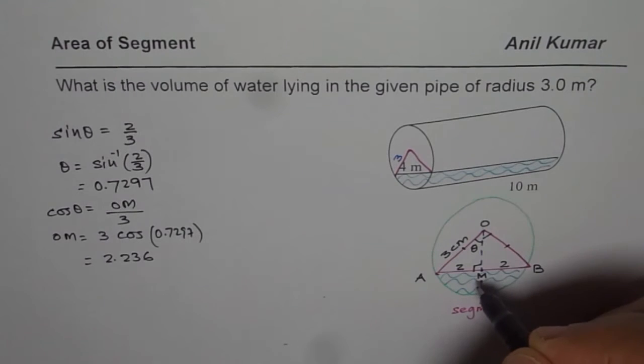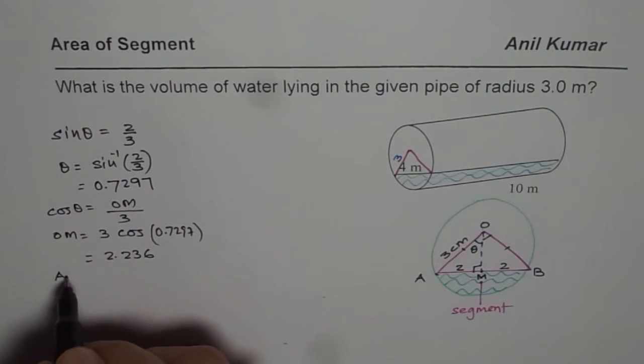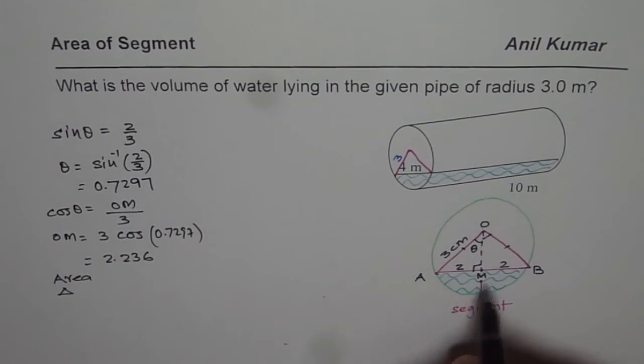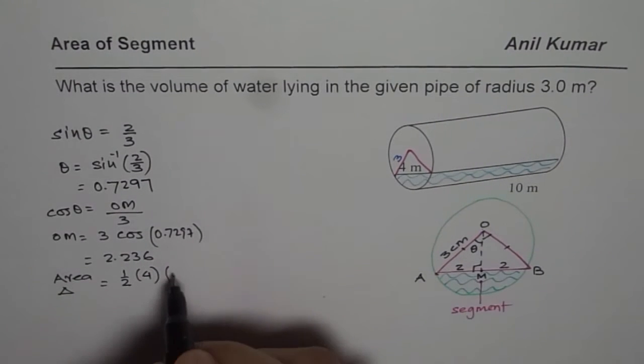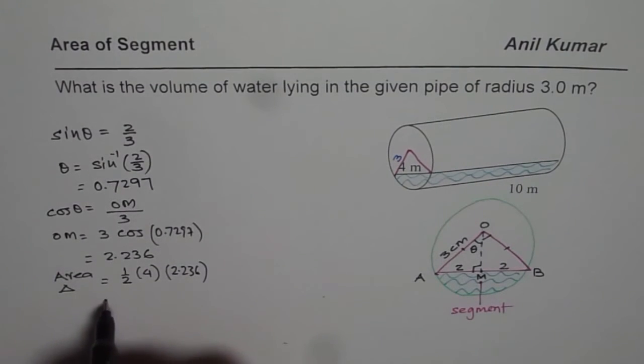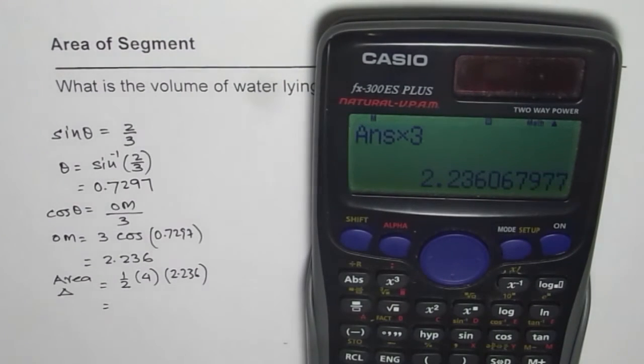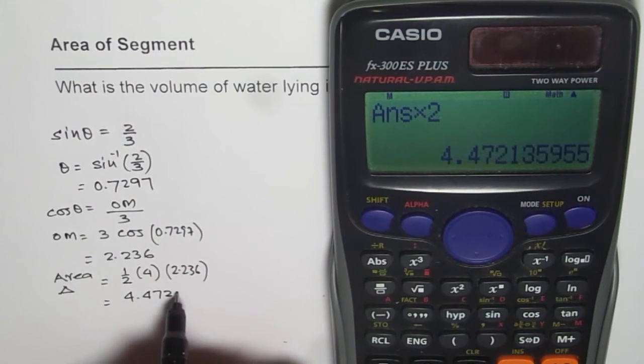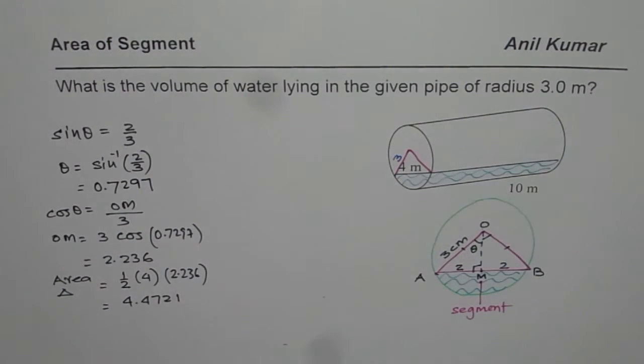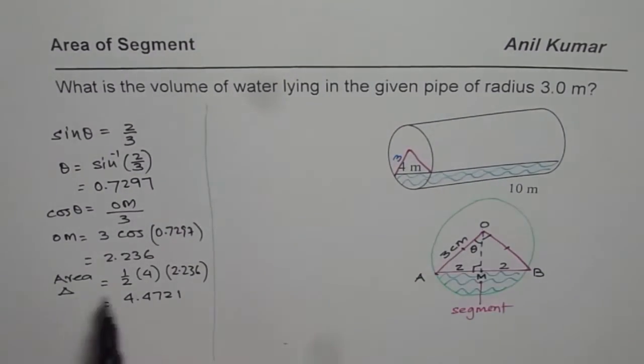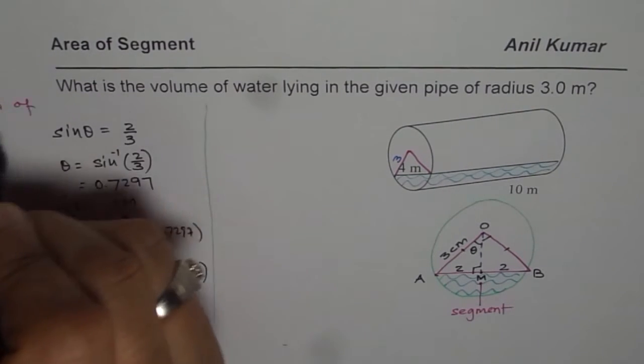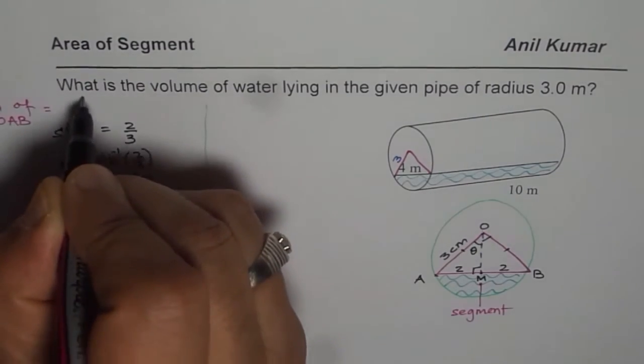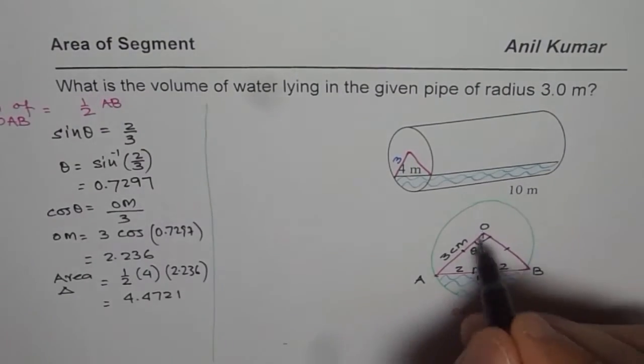So that is OM for us. So that gives us the area of triangle. So now we can say area of triangle OAB is equal to half of base AB, which is 4 for us, times height which is OM, 2.236. So let's calculate this value. We already have 2.236, multiply by 2, gives us 4.4721.